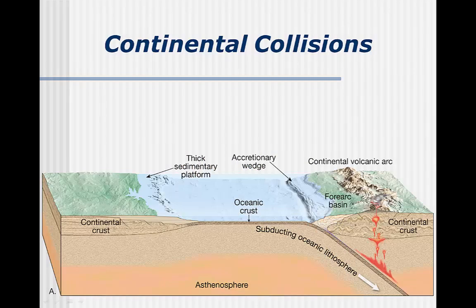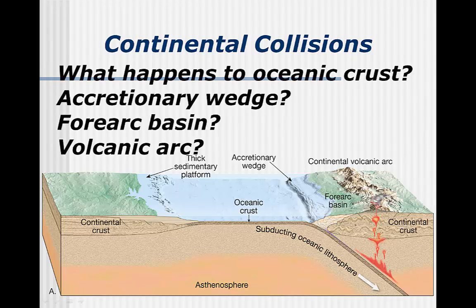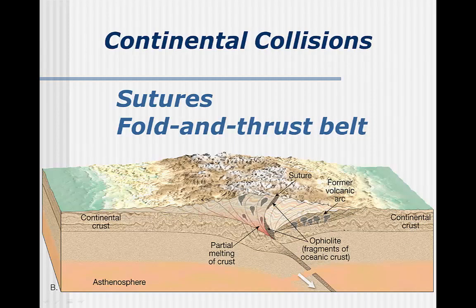The third type of convergent boundary usually starts with oceanic crust between two approaching continents. Some of the oceanic crust will be subducted before the continents collide, but everything else is pushed up into the mountains. The zone where the two continents are welded together is called the suture. More broadly, the entire mountainous region is known as a fold and thrust belt, because as the continents continue to compress together, the rocks are either folded or faulted in the case of thrust faults.